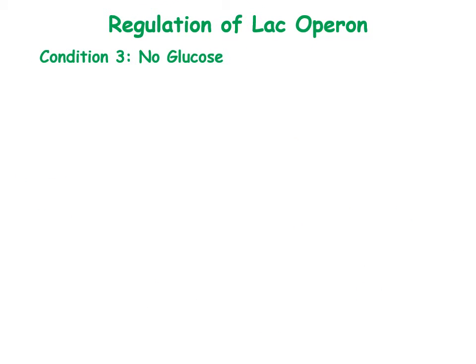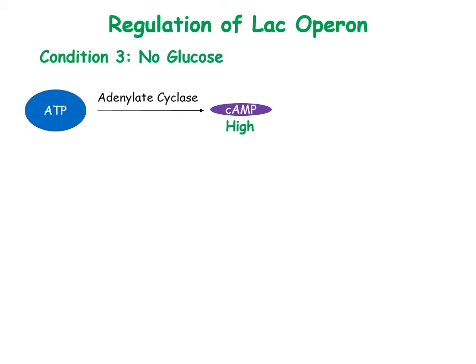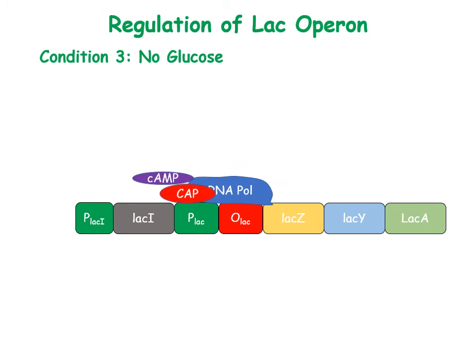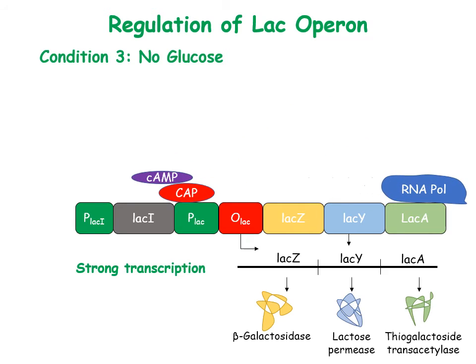Condition 3: When glucose is absent, adenylate cyclase converts ATP to cyclic AMP, a secondary messenger. Cyclic AMP binds to and activates CAP, also known as catabolite activator protein. This complex binds to the LAC promoter and brings about strong transcription of the LAC genes.